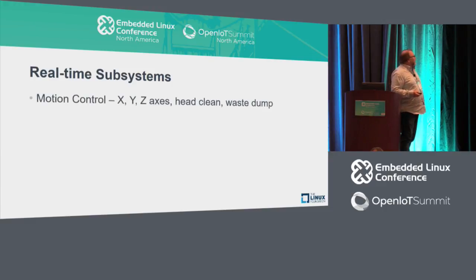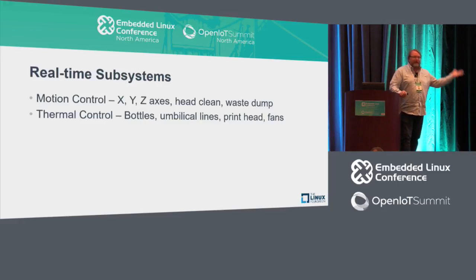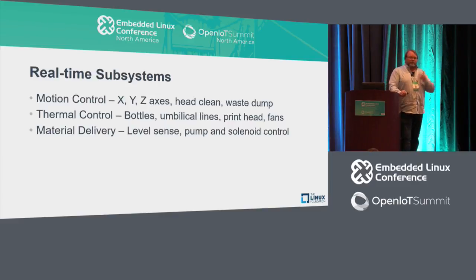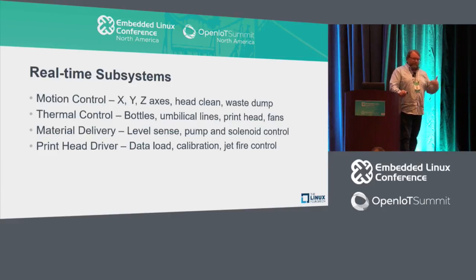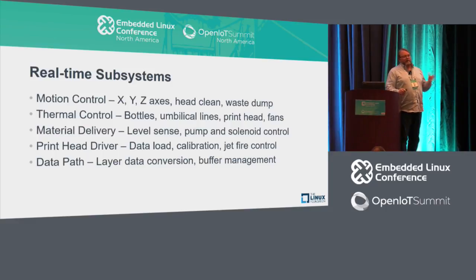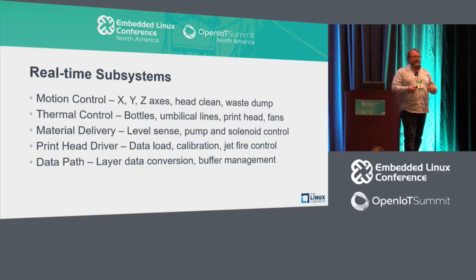These systems include motion control of all the different motors, thermal control — some things have to be heated up, some cooled down, the curing of the resin is exothermic so we have to get rid of that heat — material delivery with sensing of levels in the printhead and bottles, pumping and valves. The printhead itself must be controlled for jet fire, data load, and pre-printing calibration. As data comes in, it has to be reorganized in real time because of the printhead's geometry — it's not a simple FIFO where you push pixels through.